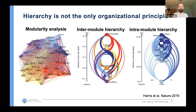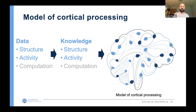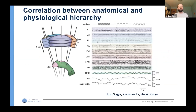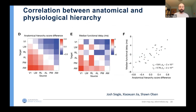The hierarchy is relatively shallow, but it is statistically highly significant. Hierarchy is not the only organizational principle we found — there is a modularity analysis, an intermodule hierarchy, an intramodule hierarchy, and we can put all of these principles together. That was an extraction of principles at the level of anatomy. Now I'm going to briefly compare it with what we see at the level of activity and computation. In order to correlate it with anatomical principles, we used a large-scale dataset based on Neuropixels recordings.